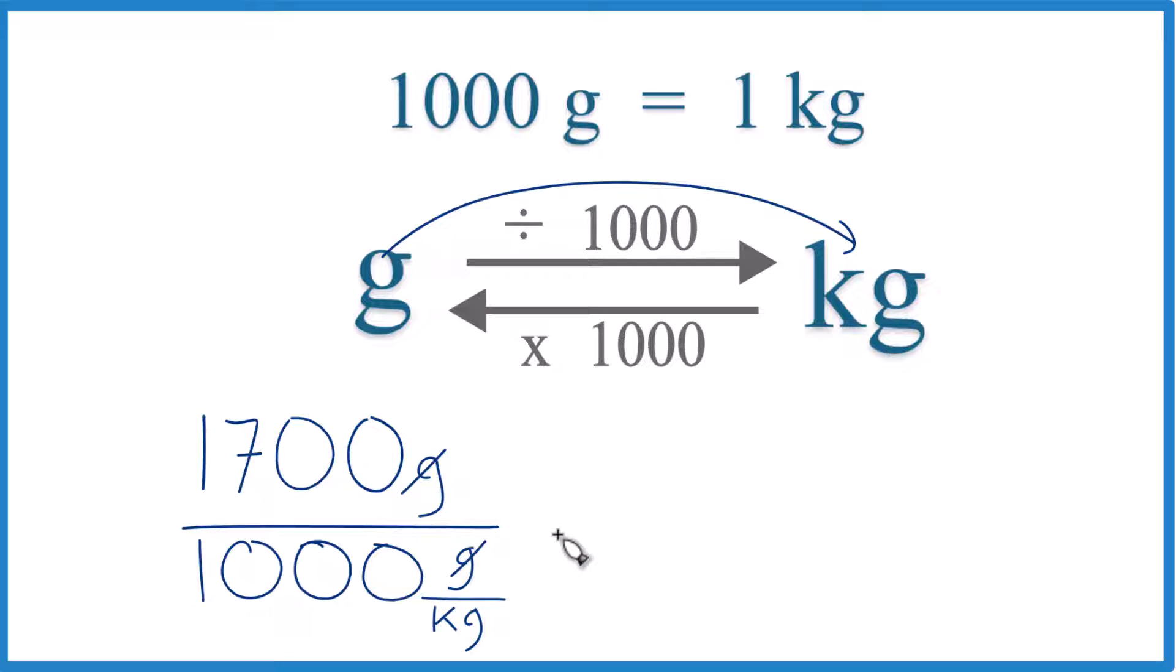Grams on top and the bottom, they cancel out. So let's move the decimal point 1, 2, 3. So this is just 1, and then 1, 2, 3. And we end up with 1,700 grams. That equals 1.7 kilograms.